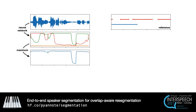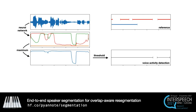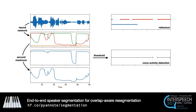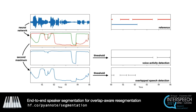First, by taking the maximum activation score at each time step, followed by thresholding, the model can be used for voice activity detection. Then, taking the second maximum activation score at each time step, it can be used for overlapping speech detection.